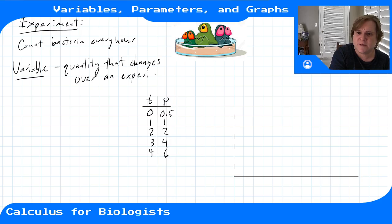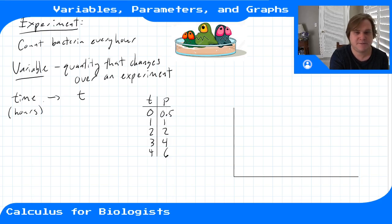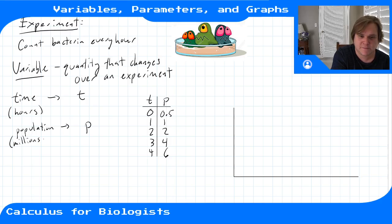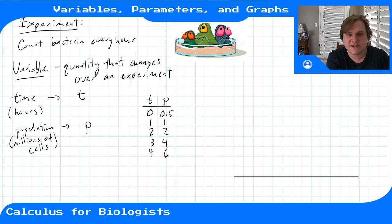So in this situation we actually have two variables. We have time, which is changing over the course of the experiment. We keep track of that with this variable, this mathematical symbol t, and time is measured in hours. And we also have our population as the second variable, which we keep track of with this mathematical symbol p, and population is measured in millions of cells. So for every variable we have units—variable t is time measured in hours, the variable p is measured in millions of cells.